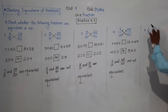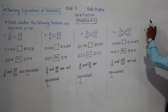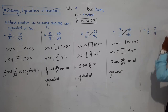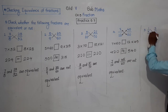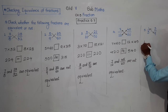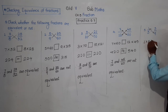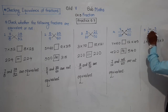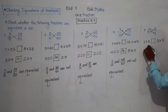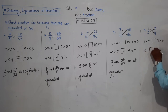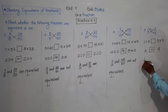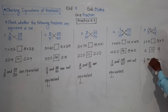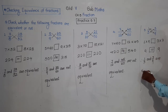Next, fifth example: 1 upon 3 and 3 upon 9. Let's do the cross product: 1 into 9 on one side, and 3 into 3 on the other. 9 ones are 9, and 3 threes are 9. They are equal. So 1 upon 3 and 3 upon 9 are equivalent.